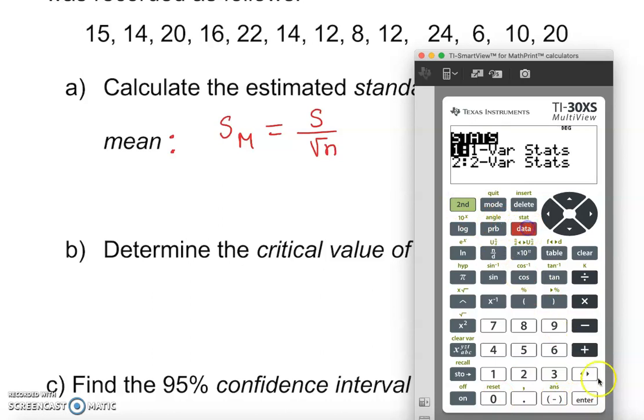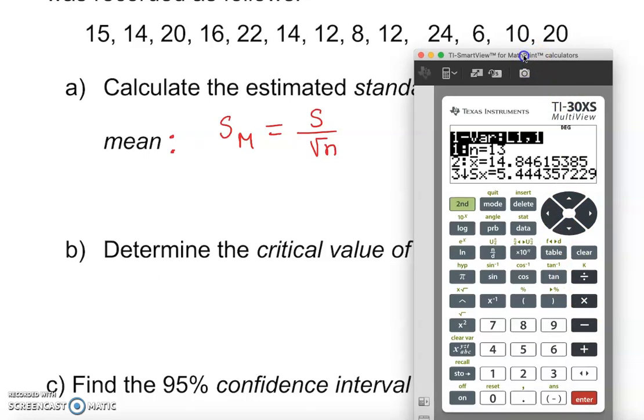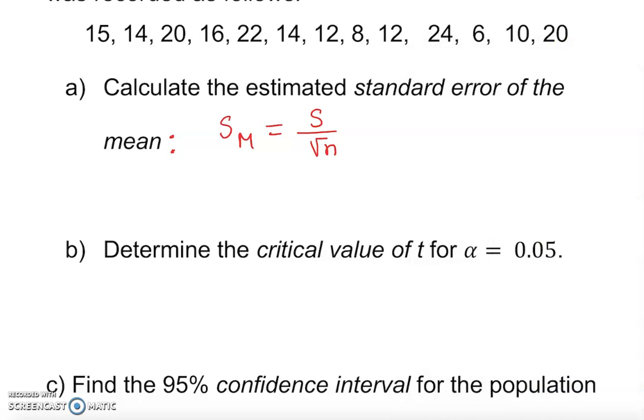Second data enter, 20 enter. We clearly have 5.44 as a standard deviation. The standard deviation is 5.44 approximately. So 5.44 over square root of n. What is n? n is 13, so that would give us...